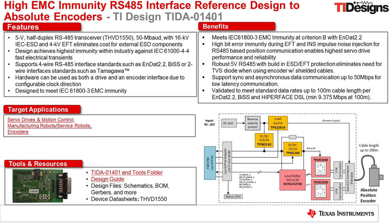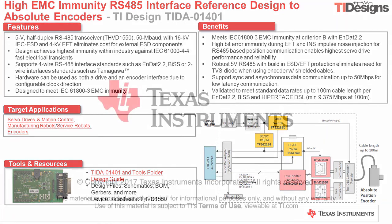TI's high EMC immunity RS-485 interface reference design for absolute encoders contains a user guide including the full specifications, design steps, layout guidelines, and test results. It also contains the schematic, bill of materials, and CAD files. For more details on this design, please visit TI.com and search TIDA-01401. For more information about TI industrial motor drive solutions, please visit www.ti.com/motors. Thank you for watching this video.